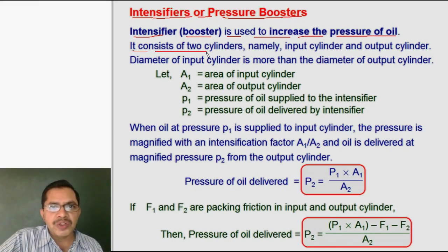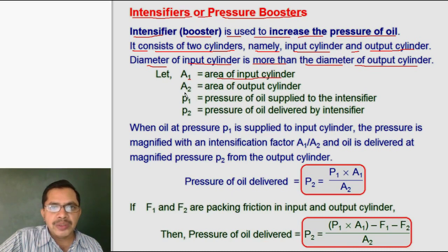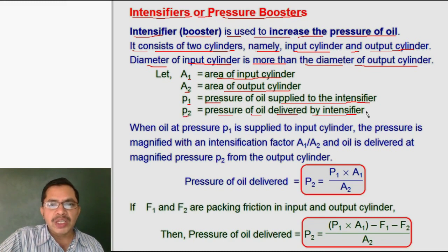Intensifiers consist of two cylinders. One is the input cylinder and the other is the output cylinder. The diameter of the input cylinder is more than the diameter of the output cylinder. A1 is the area of the input cylinder, A2 is the area of the output cylinder. P1 is the pressure supplied to the input cylinder, and P2 is the pressure of oil delivered by the intensifier or by the output cylinder.